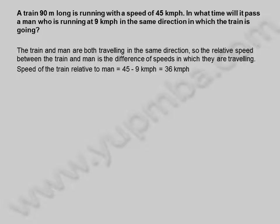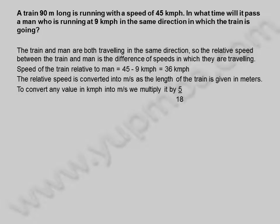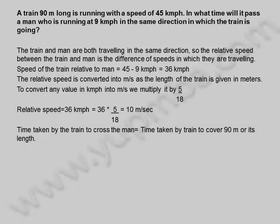The relative speed is 36 kilometers per hour. The relative speed is converted into meters per second as the length of the train is given in meters. To convert any value in kilometers per hour into meters per second, we multiply it by 5 divided by 18. Relative speed is equal to 36 into 5 divided by 18, which equals 10 meters per second.